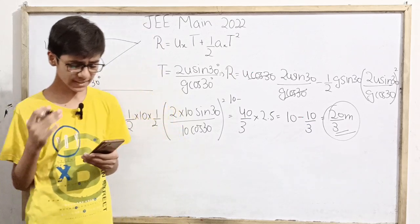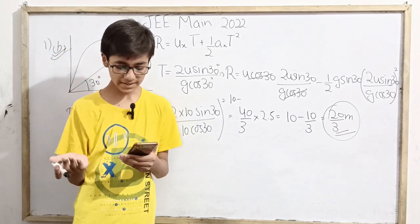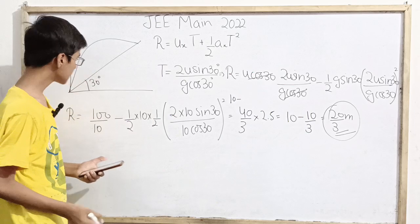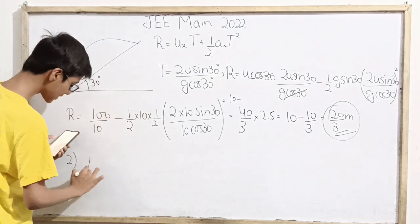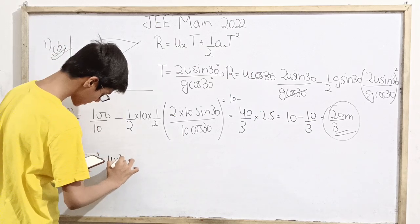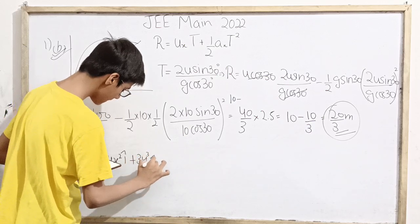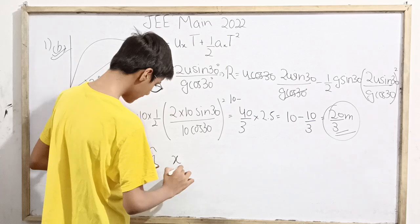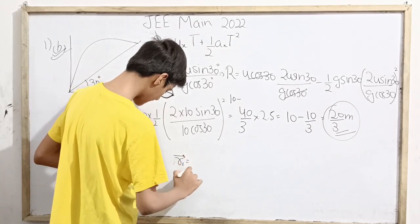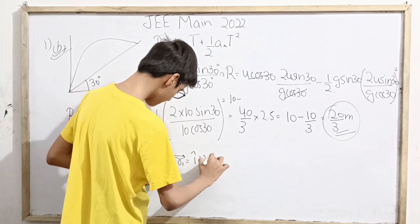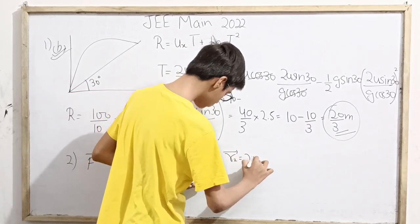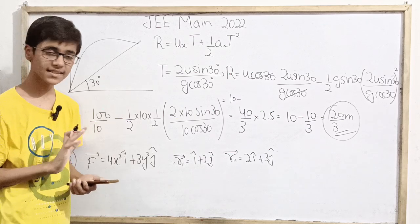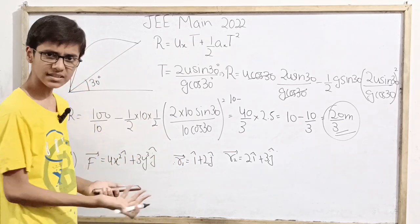Let's look at the next question: Find the change in kinetic energy if a block is displaced from (1,2) to (2,3) on applying a force of vector F equals 4x squared i cap plus 3y cubed j cap. A force acts in the plane and the block is displaced from position vector i cap plus 2j cap to 2i cap plus 3j cap. Change in kinetic energy is simply the work done by this force.